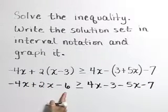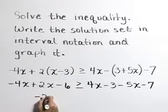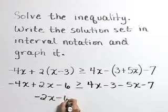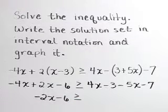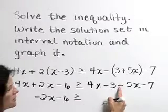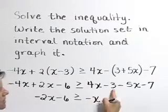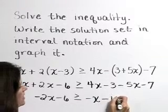Now combining like terms on both sides. Negative 4x plus 2x is a negative 2x minus 6 is greater than or equal to. On the right-hand side, 4x and a negative 5x is a negative x. Negative 3 and a negative 7 is a negative 10.